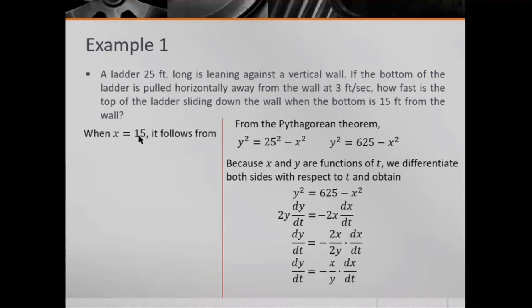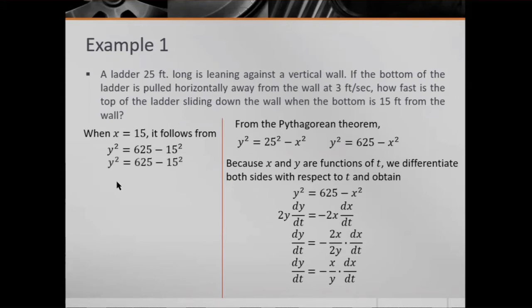When x = 15, we use the Pythagorean equation: y² = 625 - x² = 625 - 15² = 625 - 225 = 400. Taking the square root, y = 20. So x = 15 and y = 20.